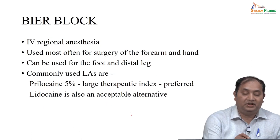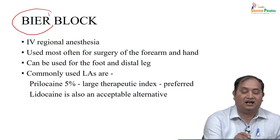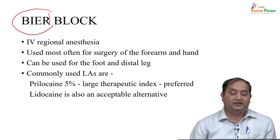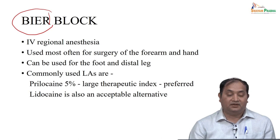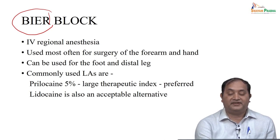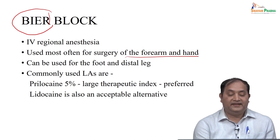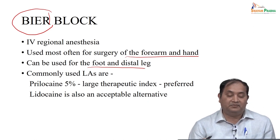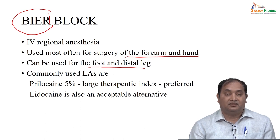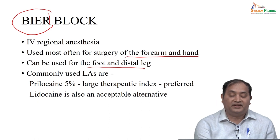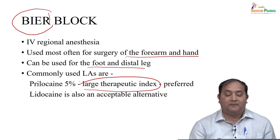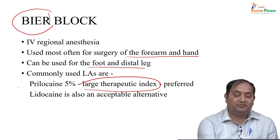Another technique is the Bier block — intravenous regional anesthesia. This is most often used for surgery of the forearm and hand, and also for the foot and distal leg. Commonly, prilocaine 5% is used for Bier block because of its large therapeutic index, making it preferred over lignocaine as an alternative.